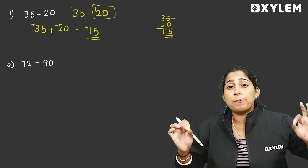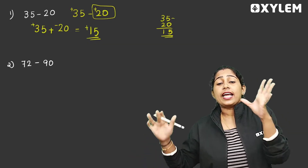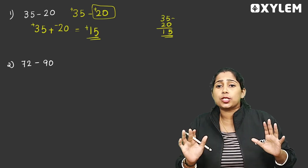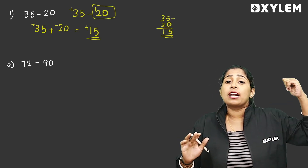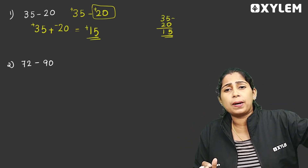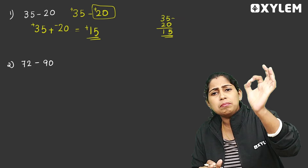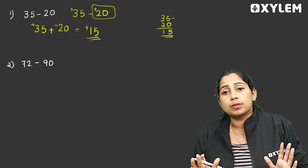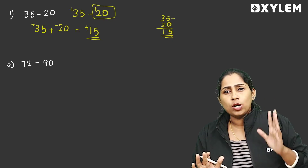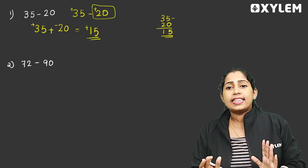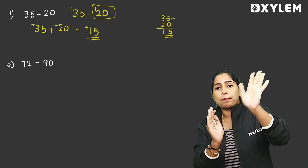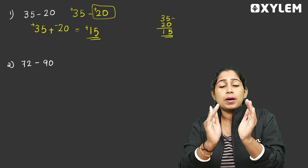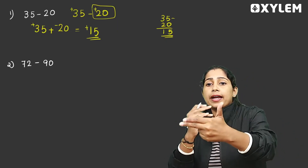We don't need any other method at first standard or second standard. We have to learn simple addition, simple subtraction, and how to add two different signs. Here is the answer. To do subtraction, add the additive inverse of the second number, then add the two different signs.